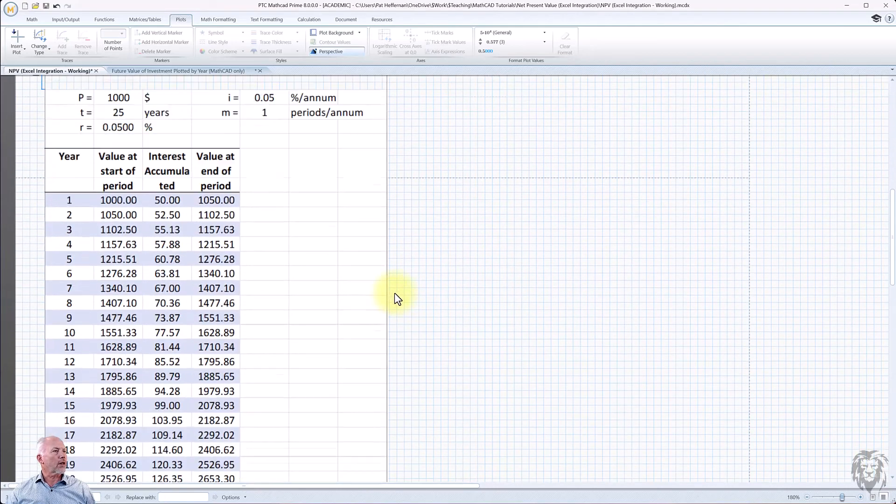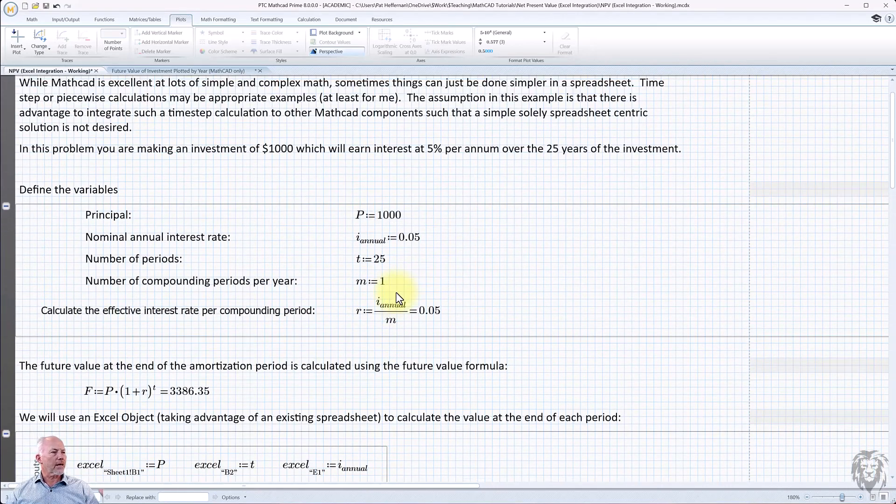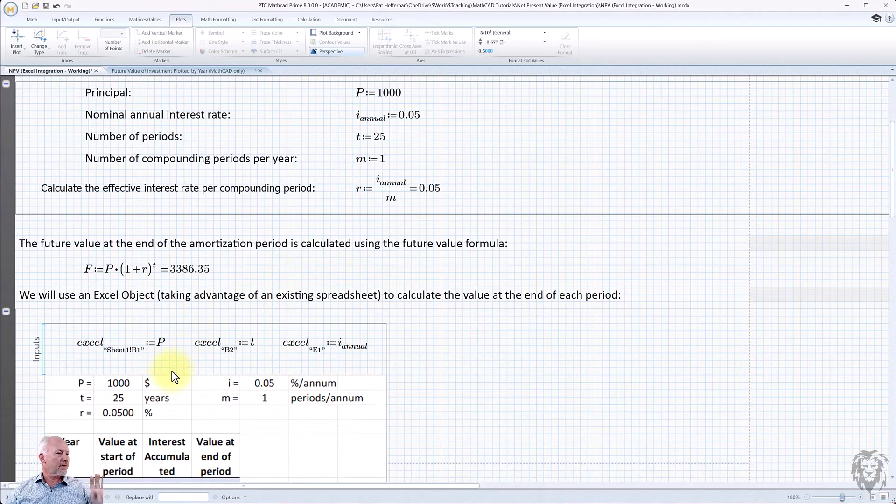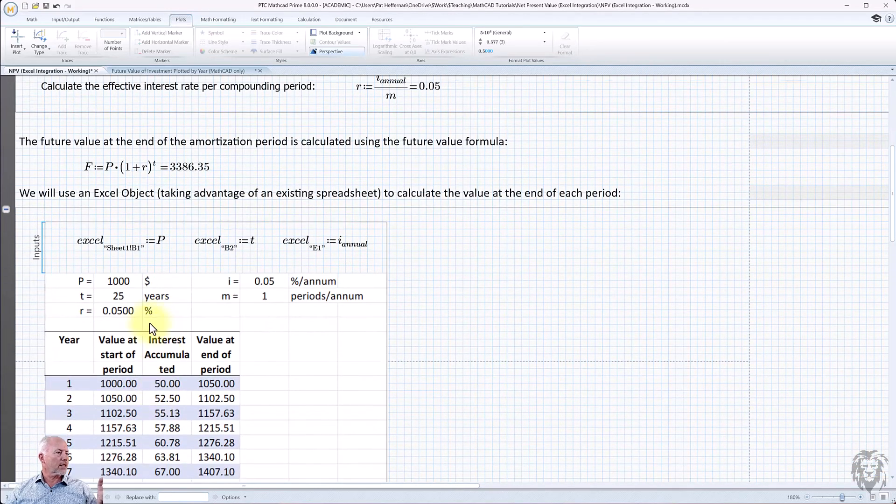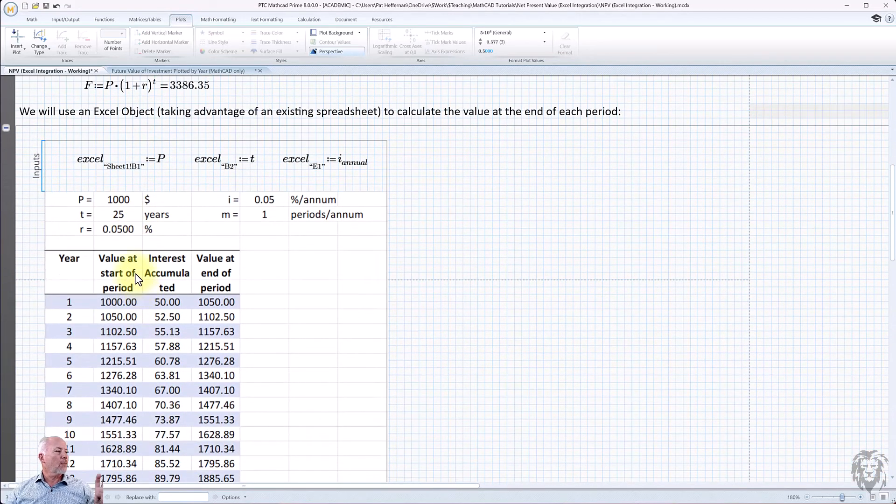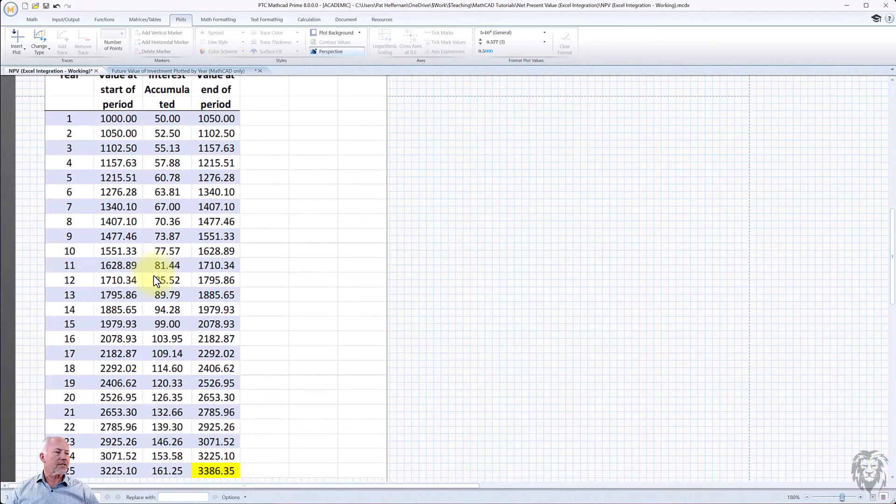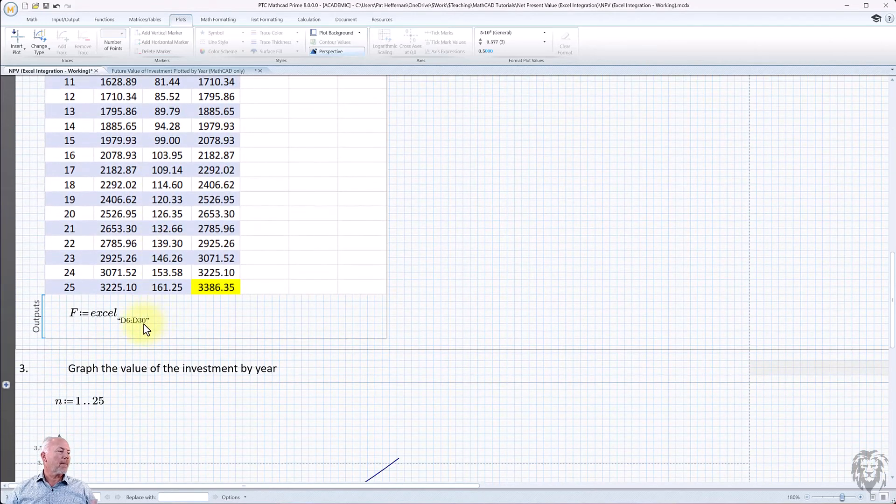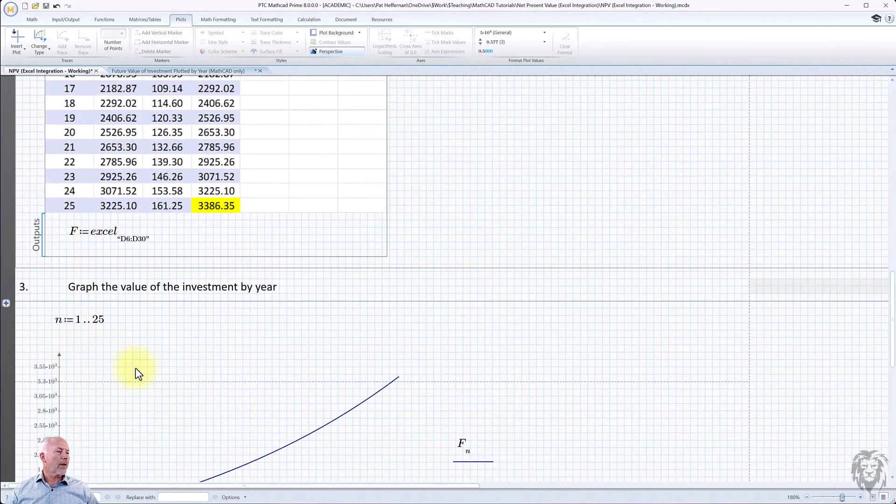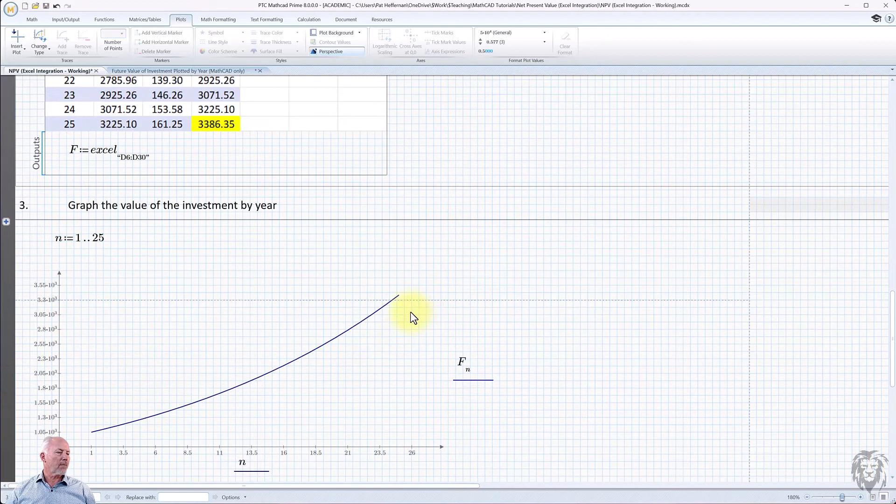And so what we did is we started with some math calculations, we passed the output of those calculations to Excel. We used an existing Excel spreadsheet to do something with those calculations and then pass the results of the Excel calculations back out, back into MathCAD, where we're able to use it as an array and plot it. So that's really the Excel object.